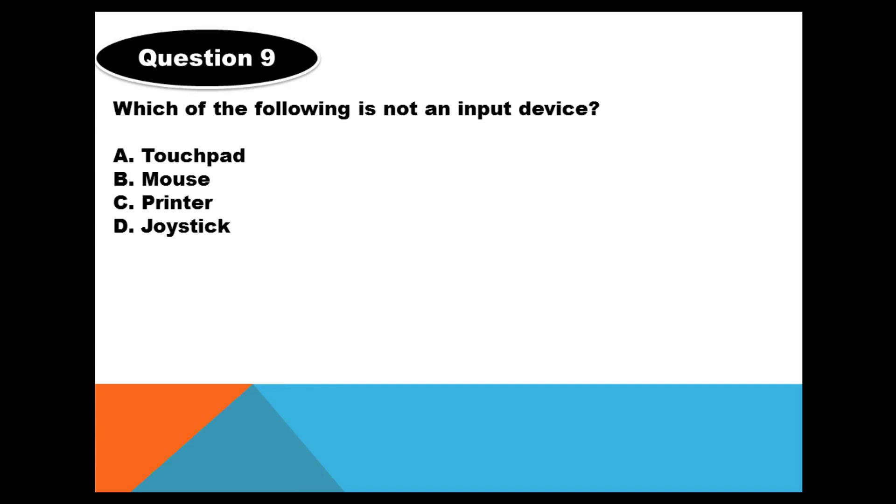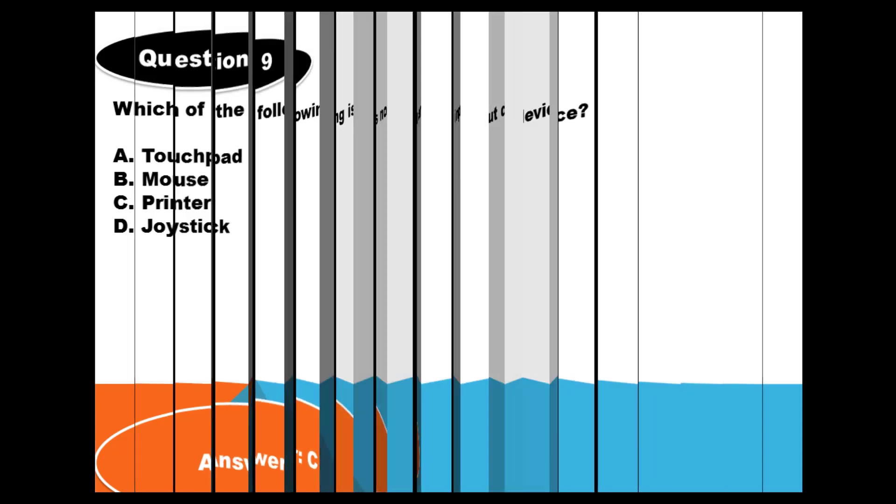Question 9. Which of the following is not an input device? A. Touchpad, B. Mouse, C. Printer, D. The joystick. You are given five seconds to answer this question. An input device is a device that is used to enter data into the computer system. The answer is C. A printer is an output device. The touchpad, the mouse, and the joystick all are input devices.